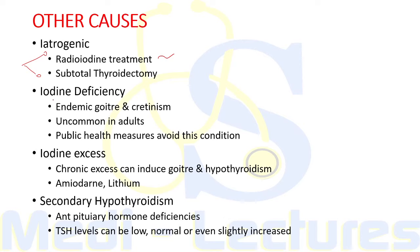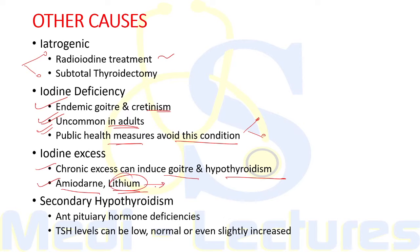Iodine deficiency is responsible for endemic goiter and cretinism but uncommonly leads to hypothyroidism in adults. Public health measures include use of iodized salt and iodized bread. Chronic excess of iodine can also induce goiter and hypothyroidism, and this can also be seen with drugs containing iodine like lithium and amiodarone; lithium inhibits iodine release from the gland.